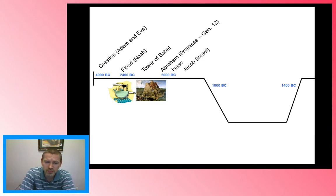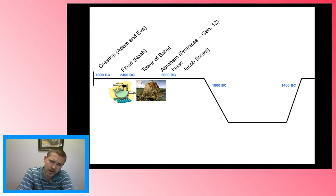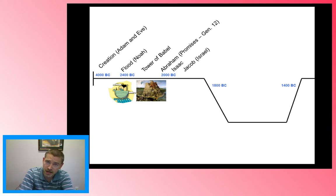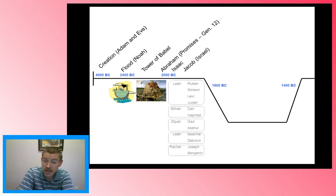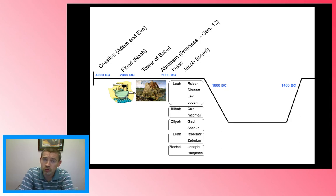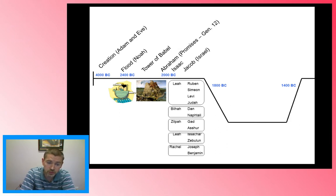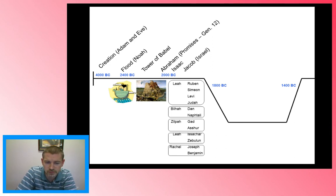Then we have what we call the time of the patriarchs — the fathers — Abraham, Isaac, and Jacob. Abraham being the father of Isaac, Isaac being the father of Jacob, and Jacob being the father of 12 patriarchs, 12 fathers, 12 sons, through four different wives.